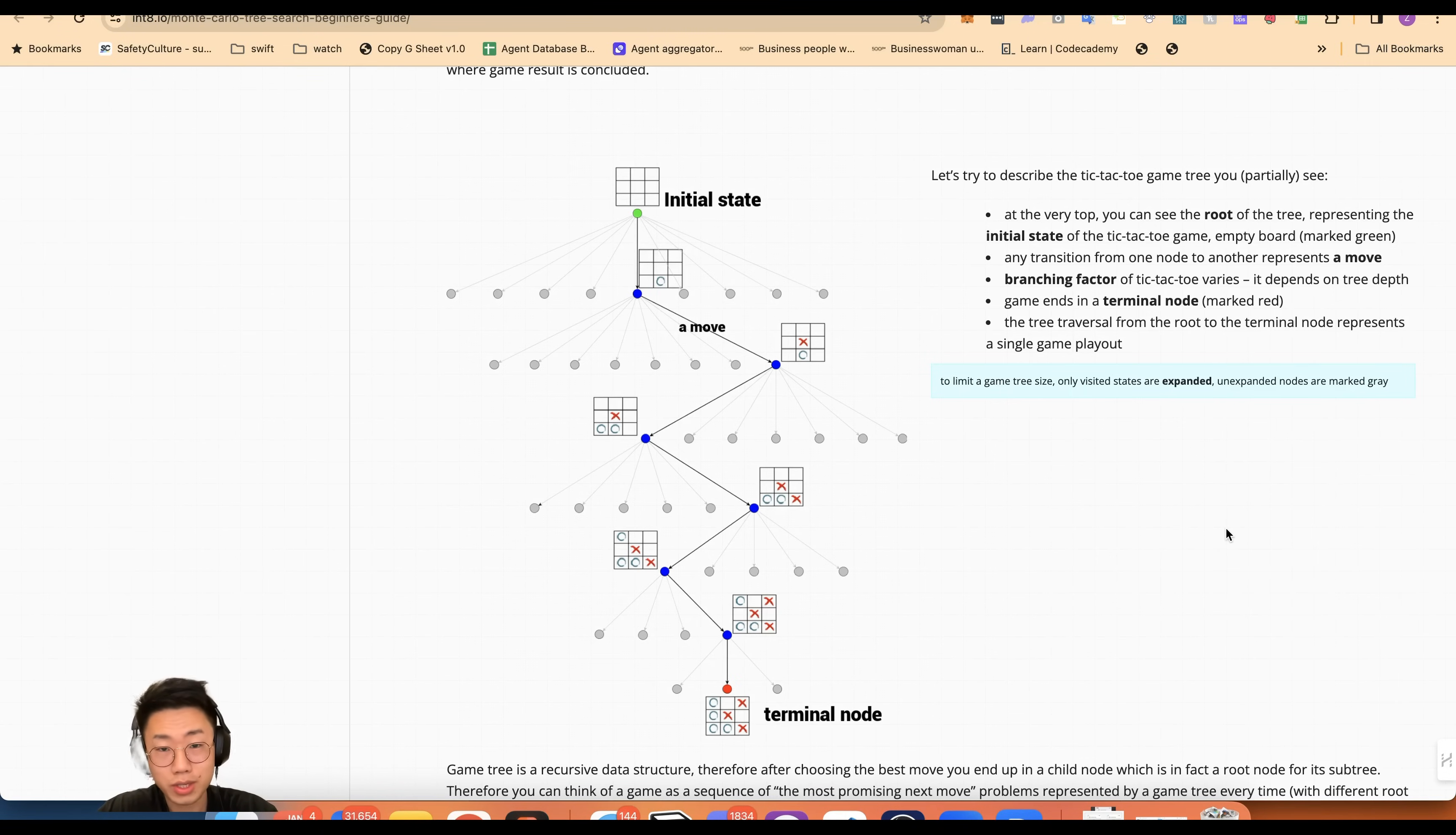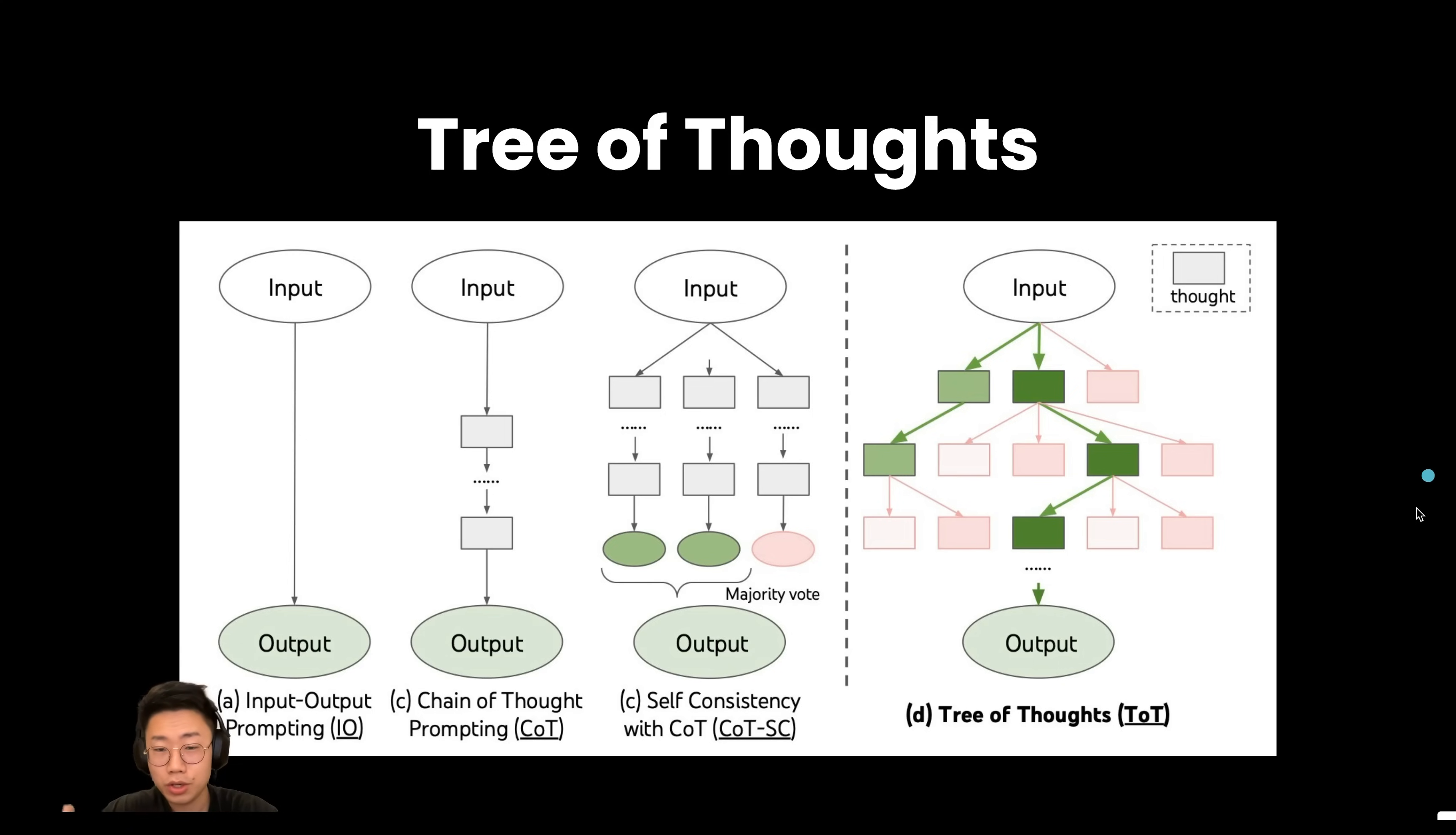So what would be really interesting is if someone actually implements an effective search ability for a large language model so that it can explore tons of different options without burning through a lot of unnecessary tokens. And that's kind of the limitation of the tree of thought mechanism at the moment.